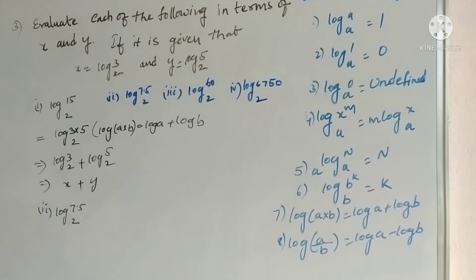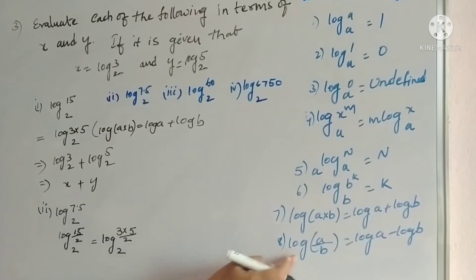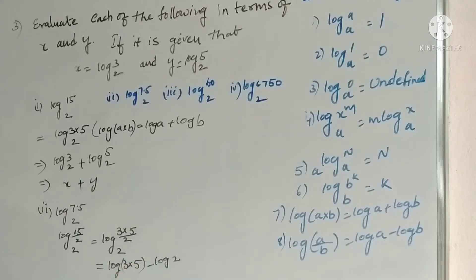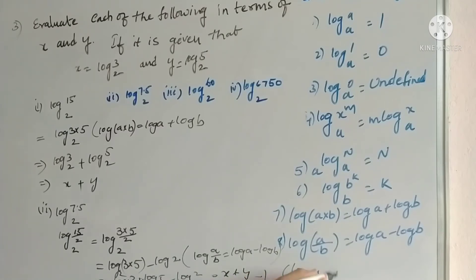The second one is log 7.5 base 2. Since 7.5 is 15/2, we write log(15/2) base 2, and 15 is 3 into 5, so log(3 into 5 / 2) base 2. Using log(a/b) equals log a minus log b: log(3 into 5) minus log 2. Then log(3 into 5) equals log 3 plus log 5 base 2, giving x plus y minus log 2 base 2. Since log 2 base 2 equals 1, the answer is x plus y minus 1.